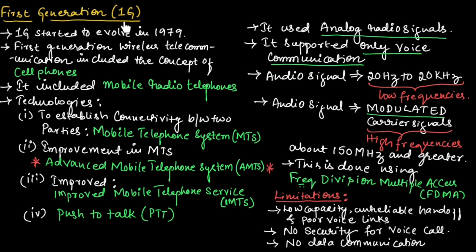The first generation is generally known as 1G. It started to evolve in the year 1979. The first generation wireless telecommunication system included the concept of cell phones and mobile radio telephones, which were used in first generation of wireless telecommunication system.